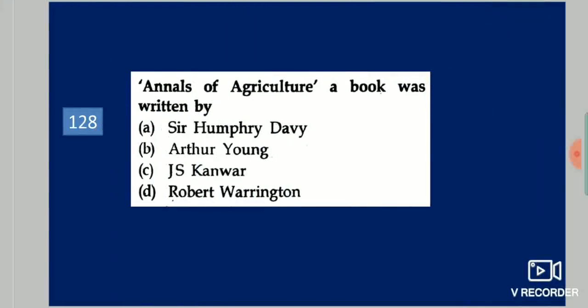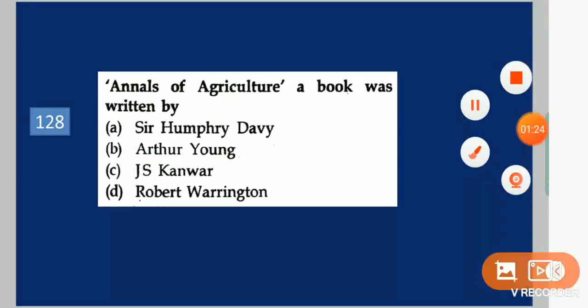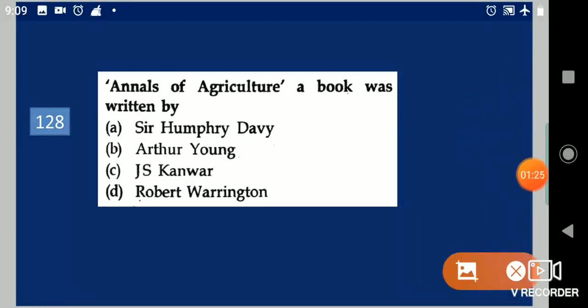Next question: Annals of Agriculture book was written by dash. Your options are: Sir Humphrey Davy, Arthur Young, G.S. Gunwar, Robert Warrington. Your answer is Arthur Young.